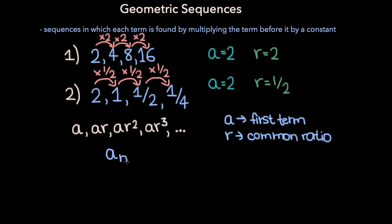Now to find the nth term in a geometric sequence, you can use the formula a sub n is equal to a times r to the power n minus 1. To understand where this formula comes from, let's look back at the general form for a geometric sequence. To get the second term, we take the first term a and multiply it by the common ratio r once. To get the third term, we take the first term and multiply it by the common ratio twice, so a times r squared. And so to get the nth term, we take the first term and multiply it by the common ratio n minus 1 times.